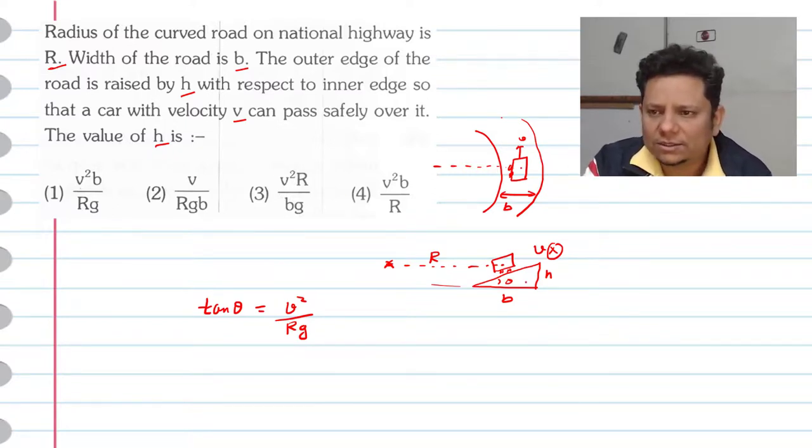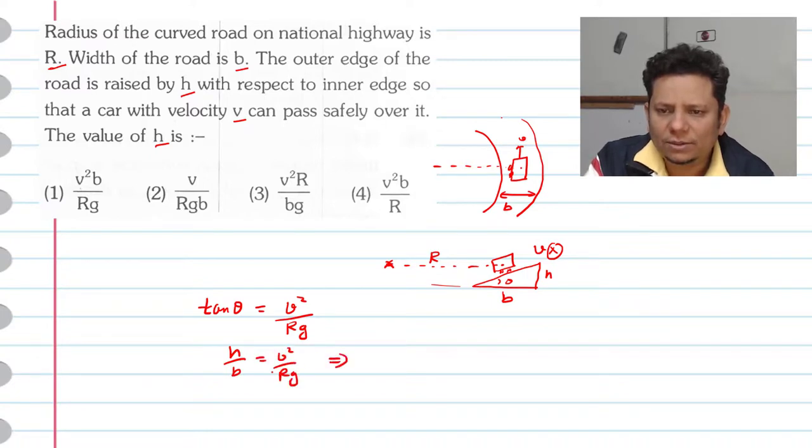Here we have from the triangle, tan theta, left hand side, H divided by B will be equal to V square divided by Rg. Which implies H, if we get the value, that will be equal to V square B divided by Rg.